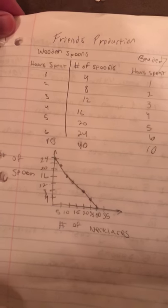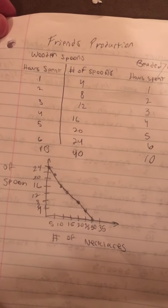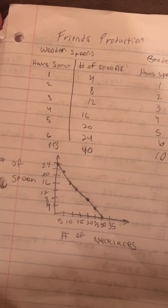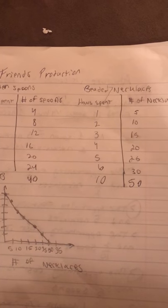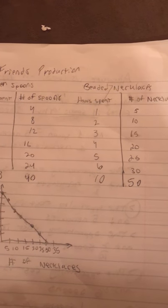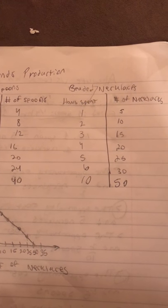For my friend's production capabilities, every one hour he spends making spoons, he makes a total of four spoons. For beaded necklaces, every hour he spends, he makes five necklaces.